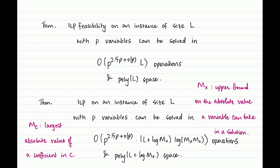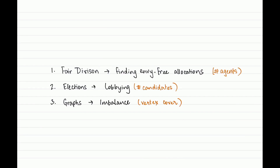With those two things in mind, let's look at some applications of this framework. We're going to look at three problems. The first comes from the area of fair division: finding envy-free allocations in a particular setting. The second is inspired by elections — a manipulative problem called lobbying. The third is from graph algorithms: a problem called imbalance. This module is split into two segments; in the first we'll talk about envy-free allocations and lobbying, and in the second we'll cover imbalance.